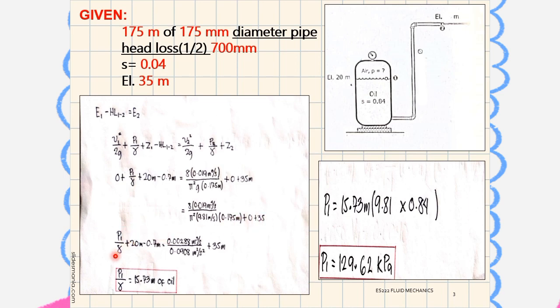P1 over gamma plus 20 meters minus 0.7 meters. So P1 over gamma plus 0.7 meters equals 0.00288 cubic meters per second divided by 0.0908 meters squared per second squared. So P1 over gamma equals 15.73 meters of oil.